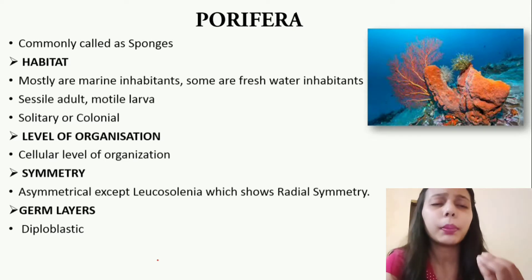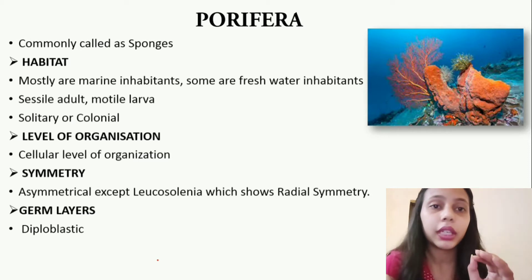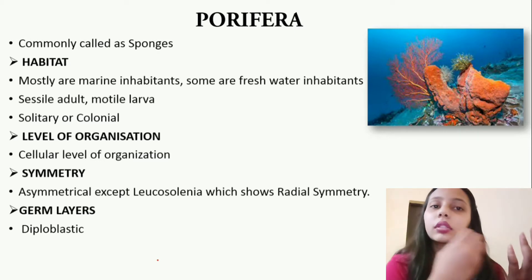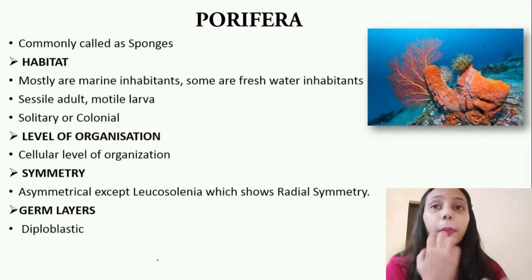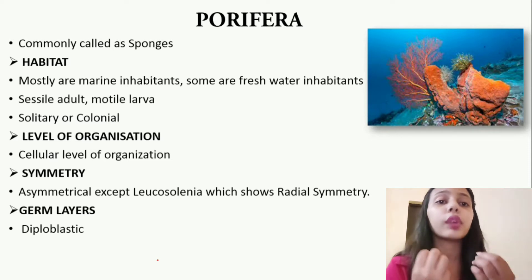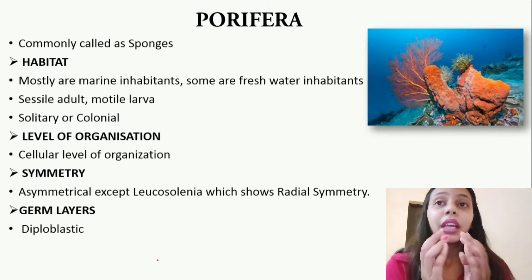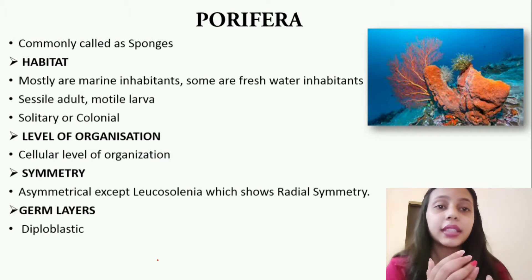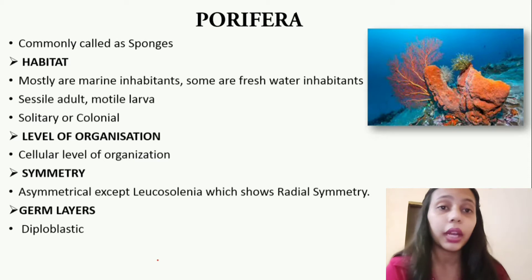तो जो level of organization है वो cellular है — यानि ये सबसे primitive phyla कहलाएगा और ये रखा जाता है Parazoa की category में। Animalia kingdom में दो तरह की categories हैं — Parazoa और Eumetazoa। जो Parazoa होते हैं वो primitive होते हैं, और उसमें हमें सिर्फ Poriferans देखने को मिलते हैं जिनमें cellular level of organization देखने को मिलता है। इसके बाद जितने भी phyla हैं, सब में tissue level start हो जाता है — cellular level और किसी phyla में नहीं होता।